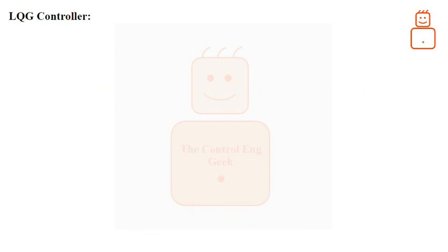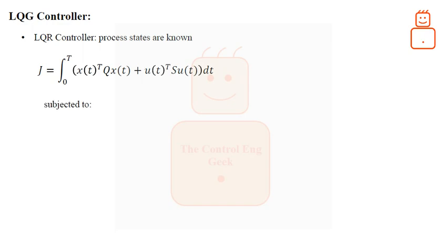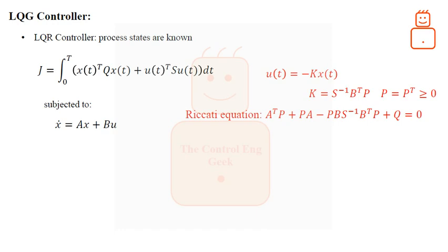The next few slides will give the equations necessary to find the optimal state feedback matrix K and the Kalman filter gain Kf. Starting with the optimal state feedback controller: the LQR problem, where all the states are known, is the problem of minimizing the following deterministic index of performance subjected to the process dynamics. For any initial state, the optimal solution is U(t) = -K·X(t). The gain matrix K is given by P, which is a symmetric and semi-definite matrix computed from the algebraic Riccati equation.